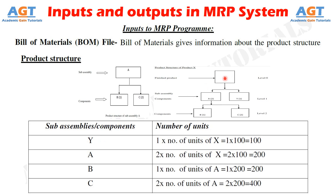Similarly, each finished product requires two components of A, so 2 × 100 = 200 components of A are needed in the sub-assembly to make 100 finished product X. We also need 200 components of B and 400 components of C in the sub-assembly to make 100 finished product X.